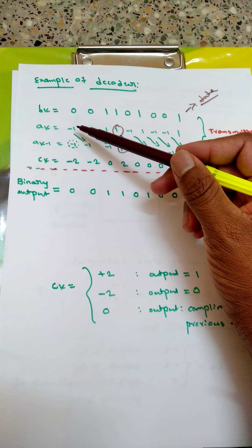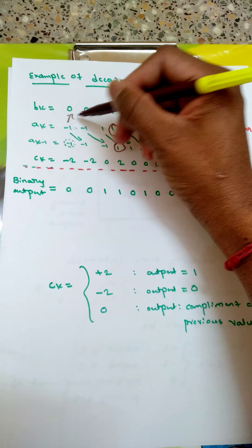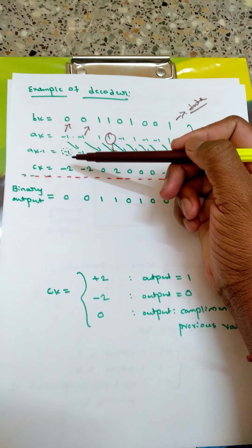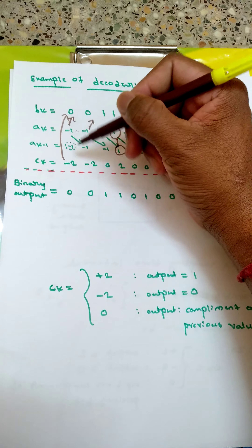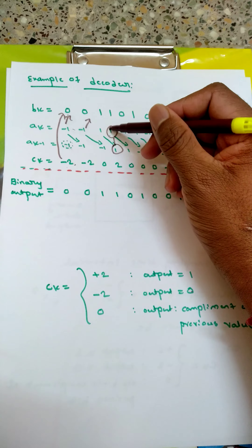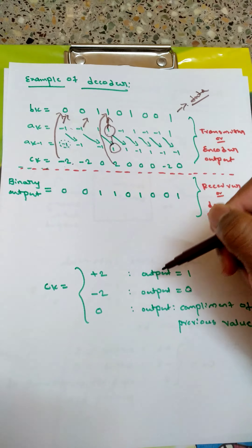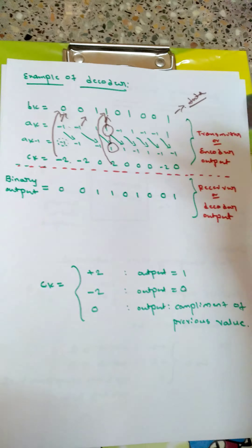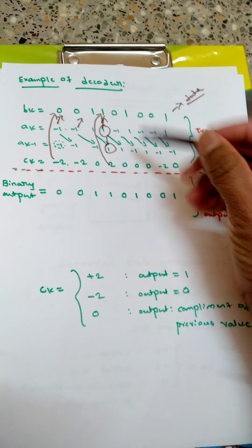When ck is minus two, the input bits are both minus one. This happens when bk is zero, making both ak and ak-1 equal to minus one. So when ck is minus two, the output is zero. When ck is plus two, the output is one. We want to recover the same output, which is why the algorithm is written this way.